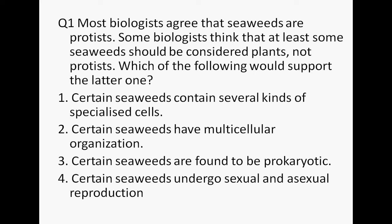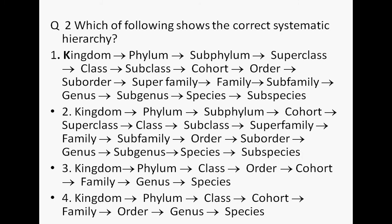Next question: which of the following shows the correct systematic hierarchy? This can be identified based on the position of 'cohort,' which falls between class and order. In the first alternate, cohort is between subclass and order. In the second alternate, cohort is between subphylum and superclass — not correct. In the third alternate, cohort is between order and family — also out.